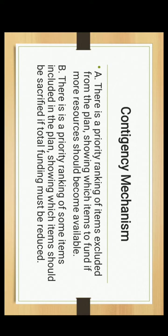The Contingency Mechanism includes two components. First, there is a priority ranking of items excluded from the plan, showing which items to fund if more resources should become available. Second, there is a priority ranking of some items included in the plan, showing which items should be sacrificed if total funding must be reduced.